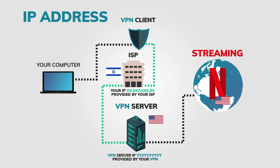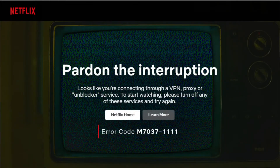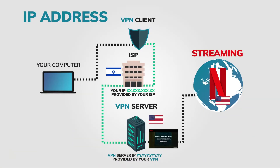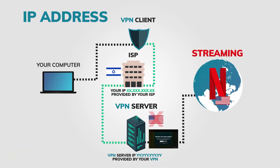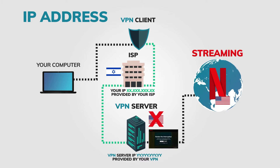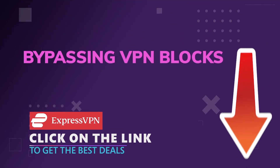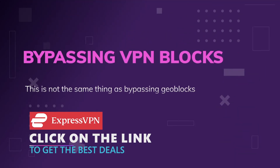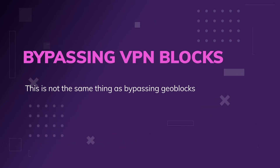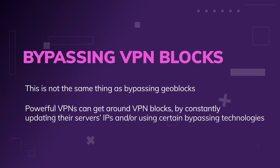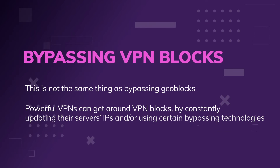Netflix in particular has been taking steps to block people using VPNs from accessing their service. They do this usually by tracking IP addresses and seeing which IP addresses are used by virtual private networks and their servers. Various VPN services take measures to bypass VPN blocking — note, this is not the same as bypassing geo-blocking, which is where traffic is blocked based on what country it's coming from. We're specifically talking about getting around anti-VPN software. The most powerful ones do this mostly by constantly updating the IP addresses of their servers, along with certain other bypassing technologies.